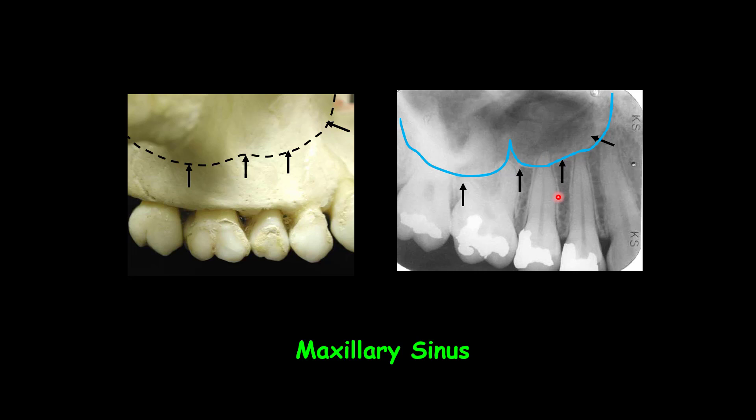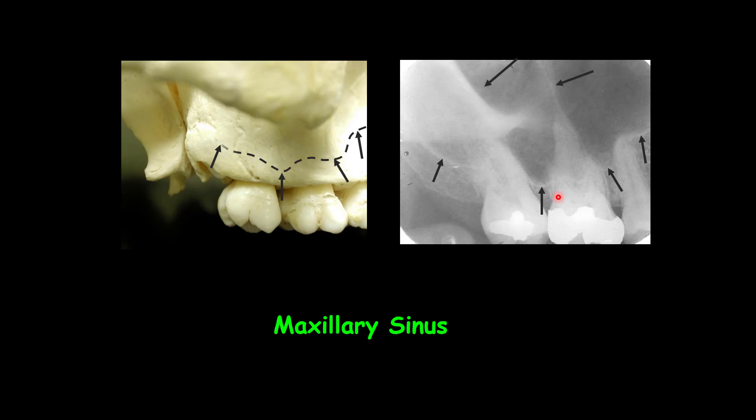Mostly when loss of the posterior teeth occurs, the sinus floor may expand further between the teeth, so you will see this kind of up-and-down appearance in practical imaging. It looks as if the roots are projected into the sinus cavity, but there is a thin layer of bone covering the roots — a fusion between the lamina dura and the floor of the sinus.